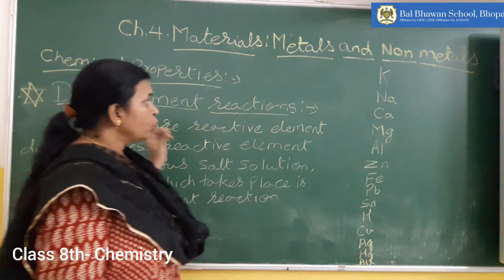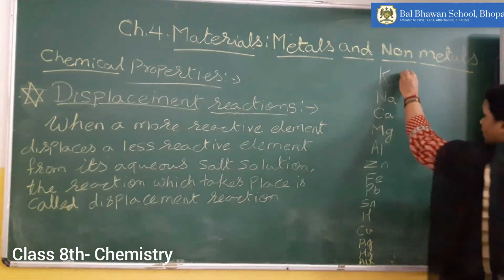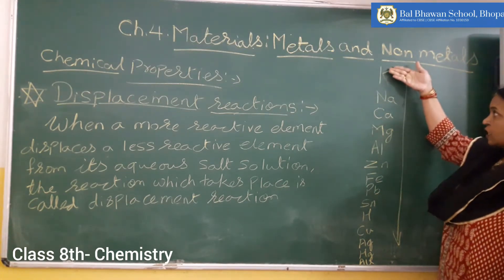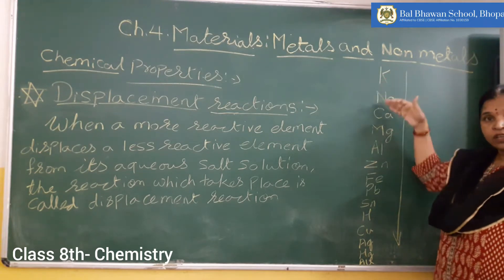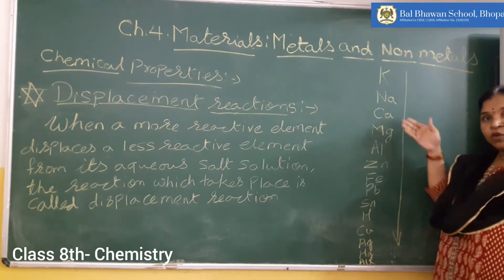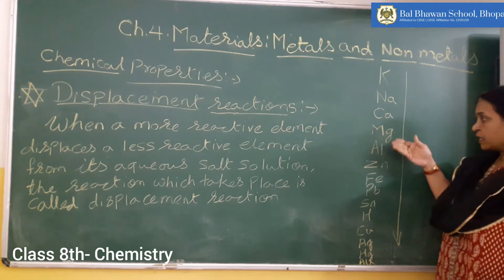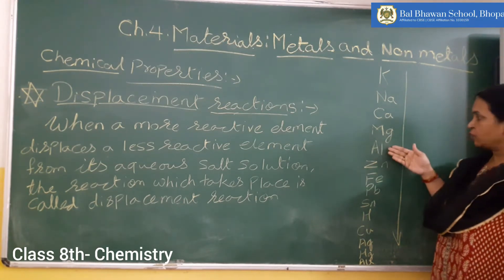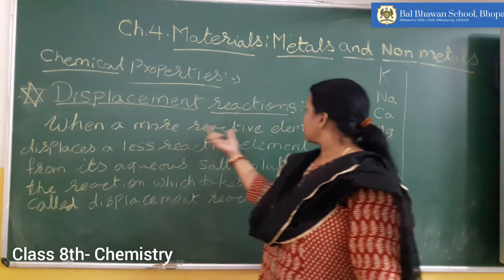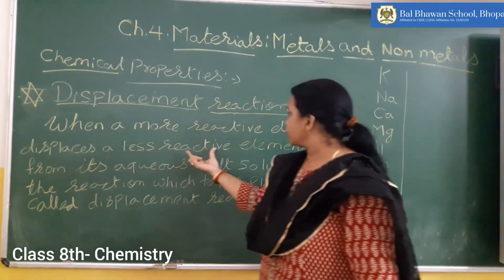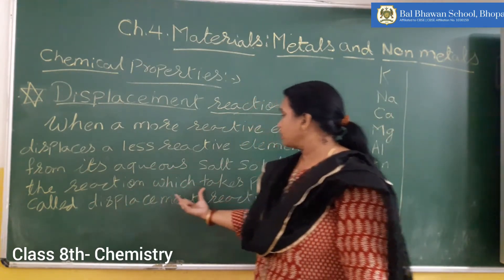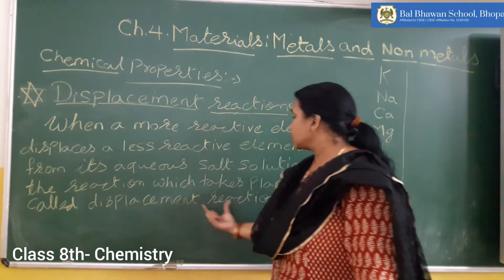What does this mean? A more reactive element displaces a less reactive one based on the reactivity series we have already discussed. The one placed above the other in the series is more reactive. For example, calcium is more reactive than magnesium, and magnesium is more reactive than aluminium. So in a displacement reaction, the more reactive element displaces the less reactive element from its aqueous salt solution.